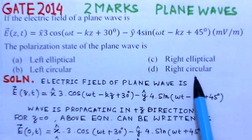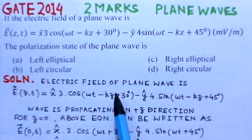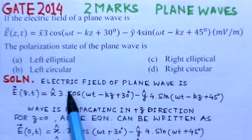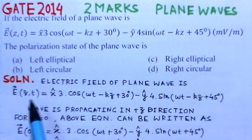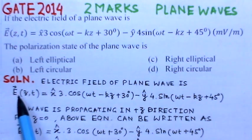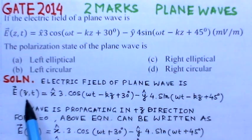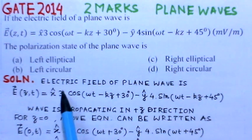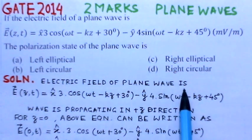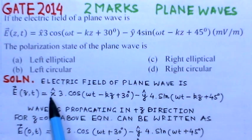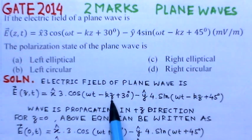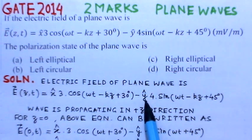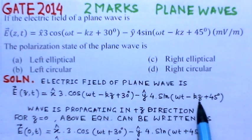We already saw a similar problem from 2015. This problem also deals with polarization but has a variation in the electric field equation and in the direction of propagation. The electric field is given as E(z,t) = x̂ · 3cos(ωt − kz + 30°) − ŷ · 4sin(ωt − kz + 45°).